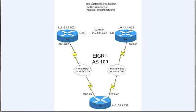If router 5 as a stub only advertises its directly connected and summary routes, when router 4 sends a route down to router 5, router 5 won't relay it up to router 2, and vice versa. There's no chance then that router 5 can become what we call a transit router. That's really the basics of what stub routing does — and it's very simple to configure.